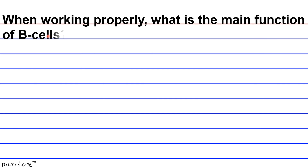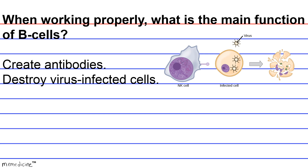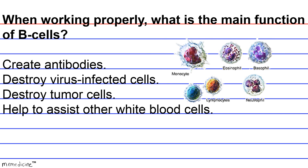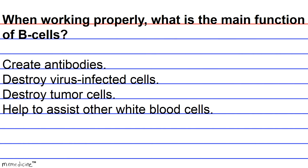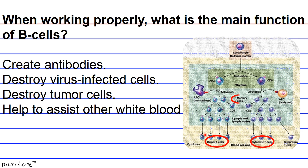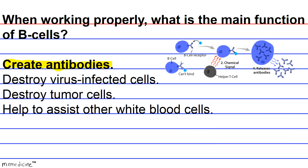Question: When working properly, what is the main function of B-cells? A) Create antibodies. B) Destroy virus-infected cells. C) Destroy tumor cells. D) Help to assist other white blood cells. There are four main types of T-cells: helper, cytotoxic, memory, and regulatory. Helper T-cells assist other white blood cells in activating immune responses, and T-cells also destroy tumor and virus-infected cells. However, B-cells are white blood cells responsible for creating antibodies. The correct answer is A.